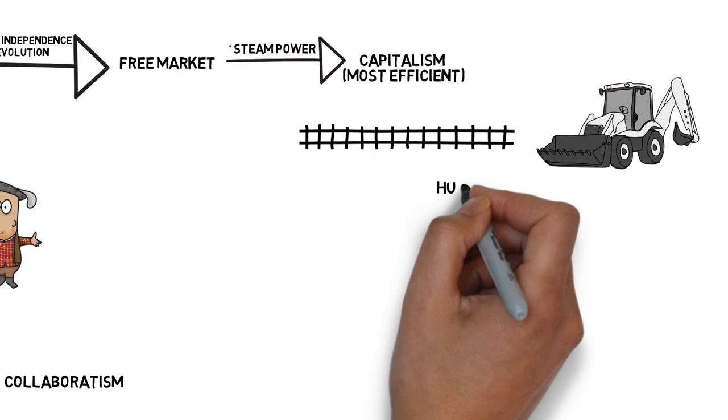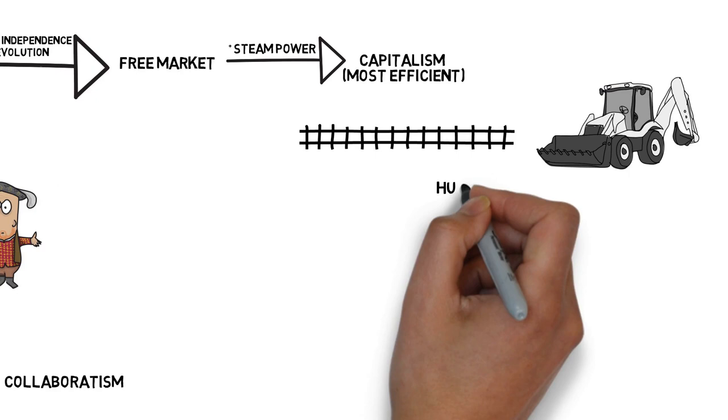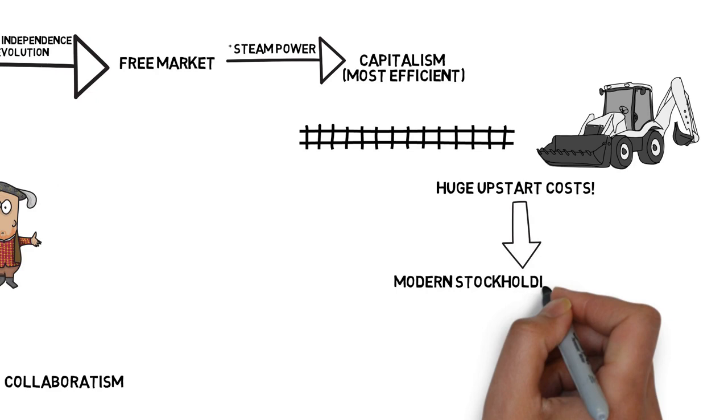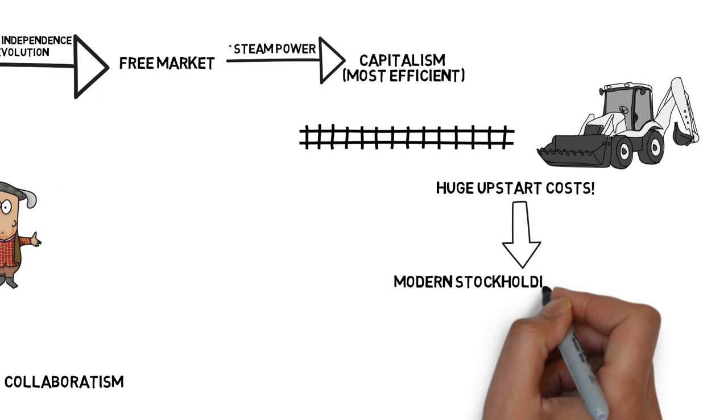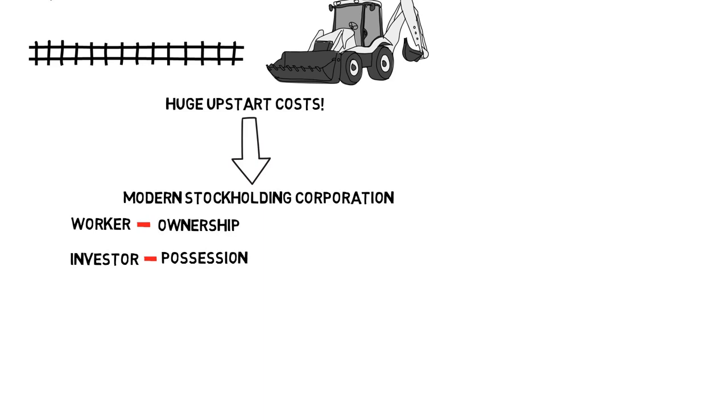The small family owned businesses of the simple market economy era, preceding capitalism, were simply incapable of covering these costs. That gave rise to the need for the modern stock-holding corporation, and so a new form of enterprise emerged, where the worker no longer owned the tools he would use to create the product, and the investor would no longer control the day-to-day affairs of the enterprise, thus separating the concepts of ownership, possession, and control for the first time.